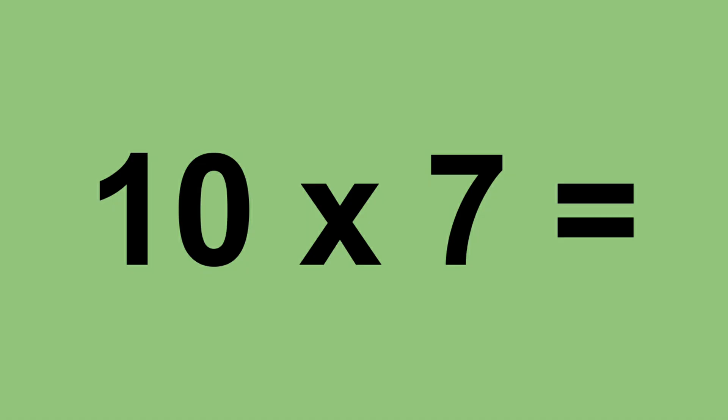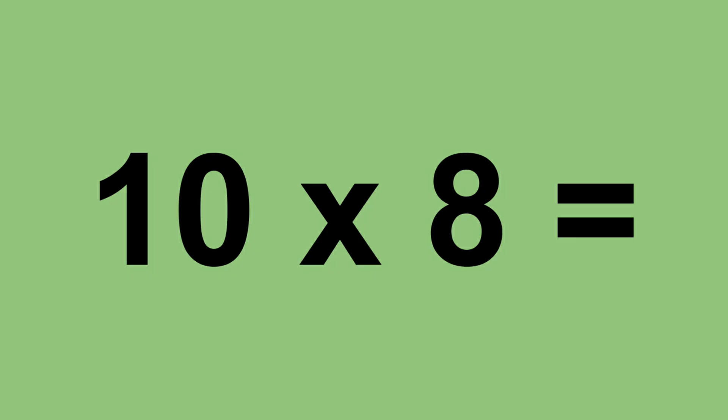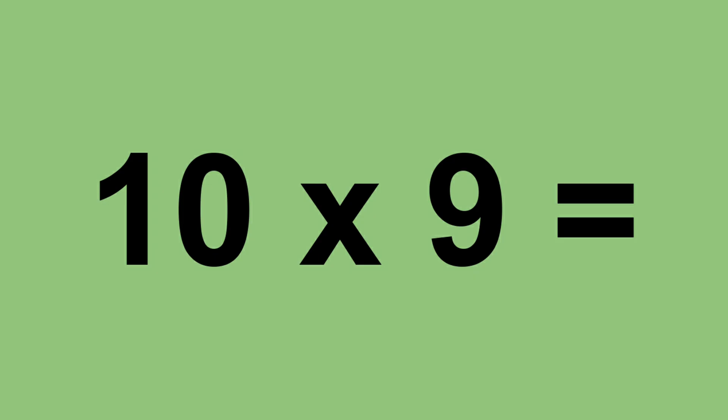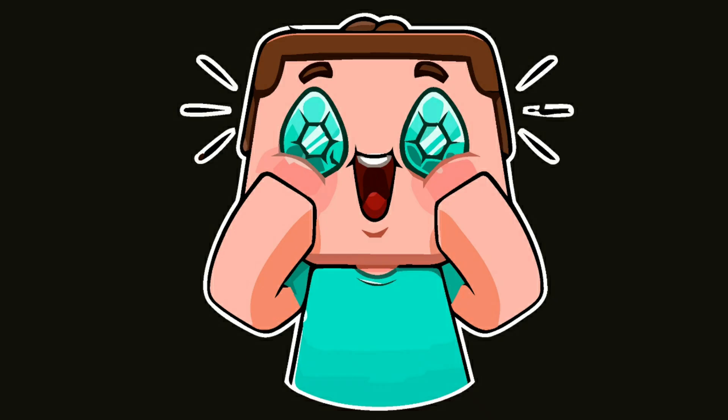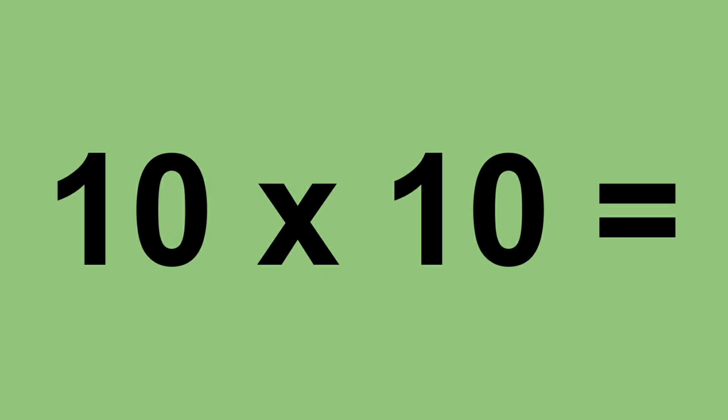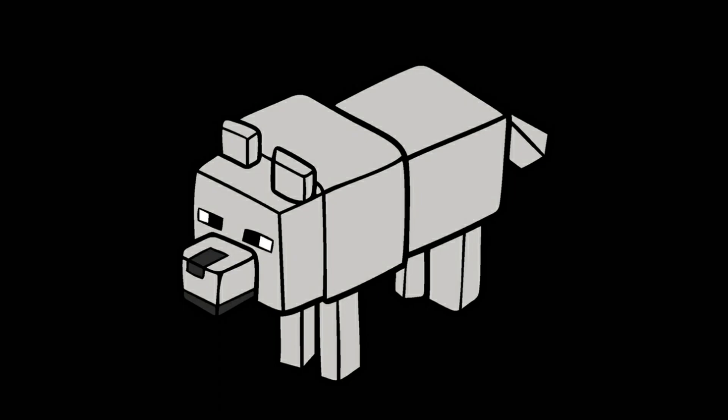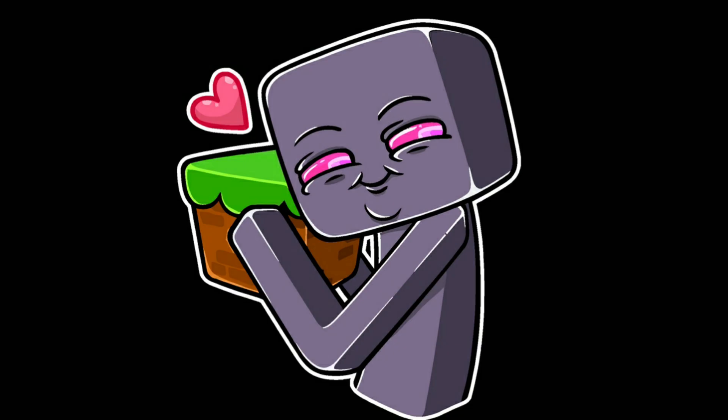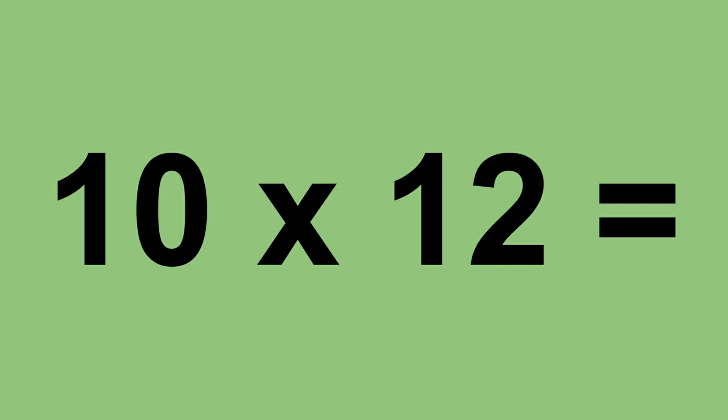10 times 7 equals 70. 10 times 8 equals 80. 10 times 9 equals 90. 10 times 10 equals 100. 10 times 11 equals 110. 10 times 12 equals 120.